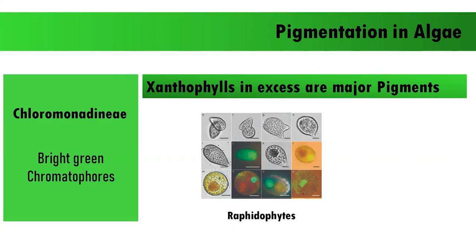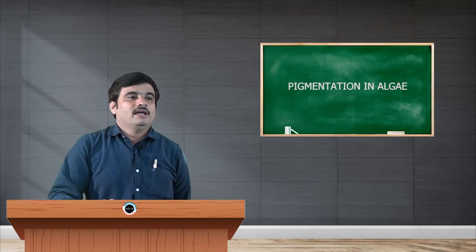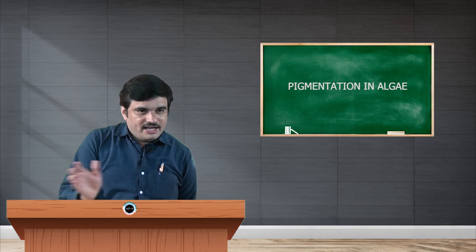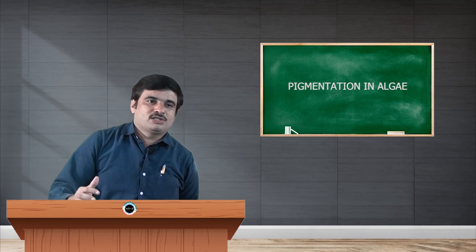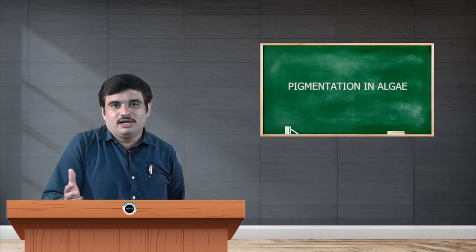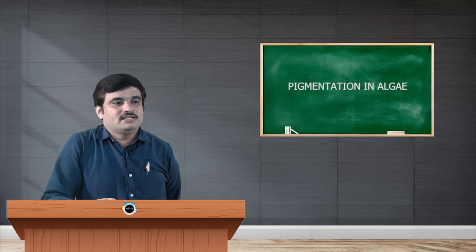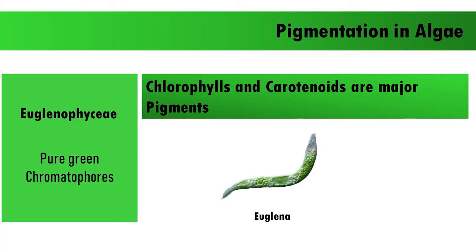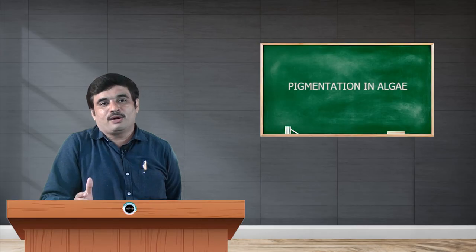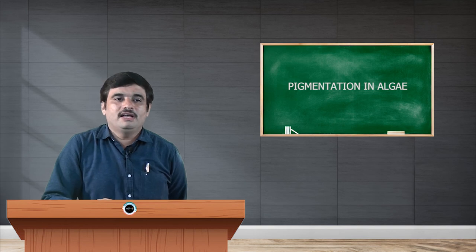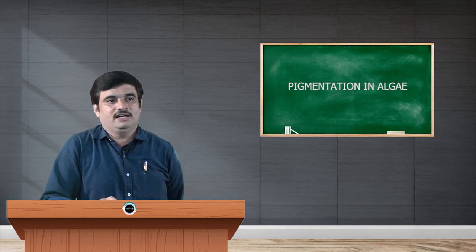Chloromonadineae has bright green chromatophores with xanthophyll as the major excess pigment, and Raphidophytes are examples of this class. Euglenophyceae, another class currently excluded from the plant kingdom, has pure green chromatophores with chlorophylls and carotenoids as the major pigments.